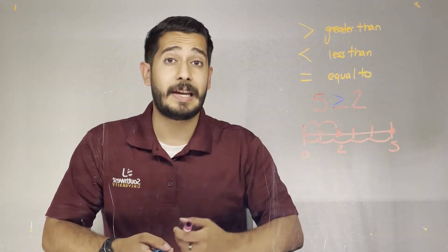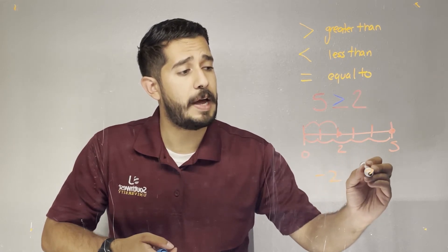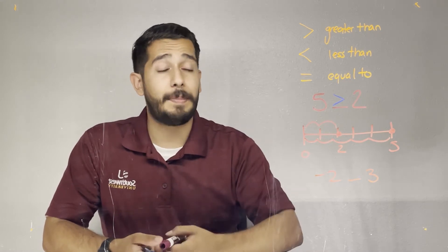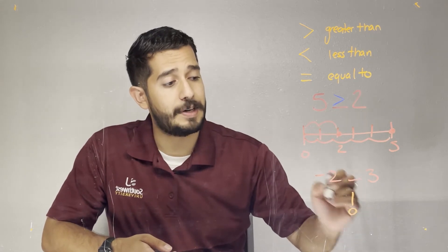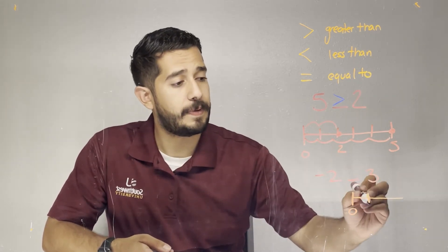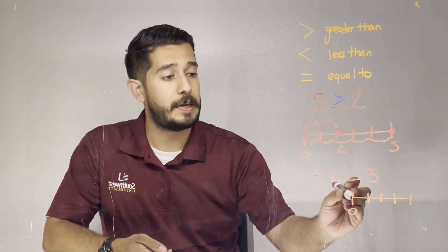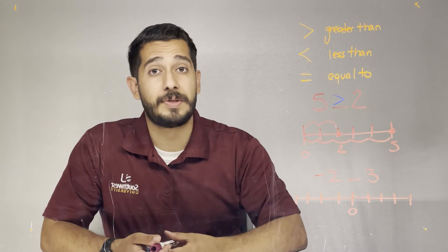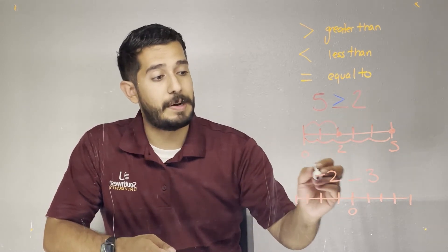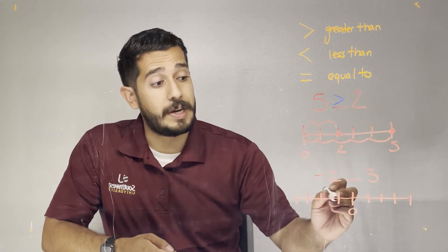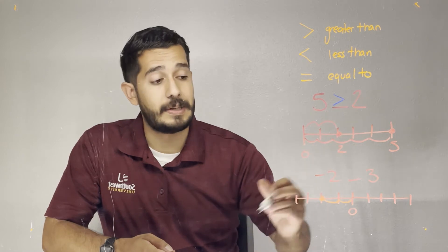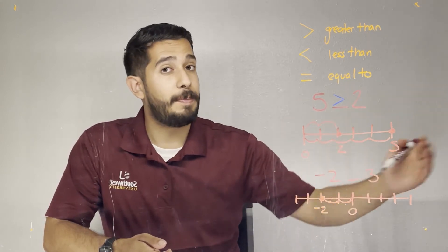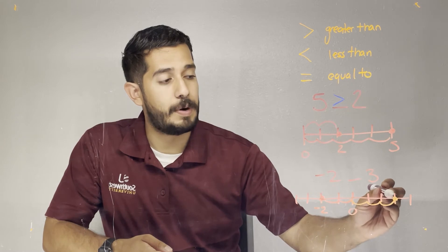Another example involving negative numbers: negative two and positive three. We have to find out which of those two numbers is the greatest, so let's place them on the number line. I start with my tick mark at zero, place enough tick marks towards the right, and also place enough tick marks towards the left. The first number, negative two, is walking two spaces towards the left — this is where negative two lies. For positive three, I have to walk three places to the right — this is where positive three lies.